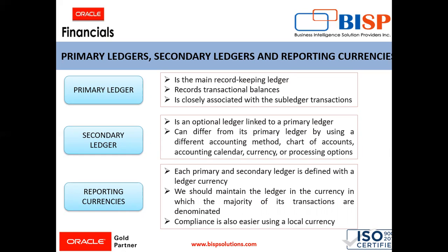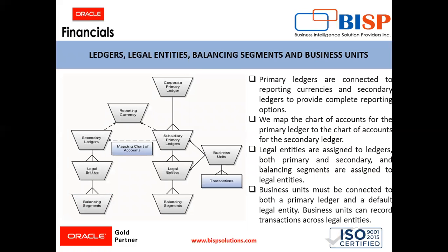The reporting currency is the currency which maintains and reports accounting transactions in an additional currency. Each primary and secondary ledger is defined with a ledger currency. We should maintain the ledger in a currency in which the majority of transactions are denominated — if we use the local currency, the compliance requirement will also get easier. If we need to maintain and report accounting records in different currencies, we can do this by defining one or more reporting currencies for that ledger. This was an overview of the primary ledger, secondary ledger, reporting currencies, and how these primary ledgers are linked with the business units, legal entities and balancing segment values.